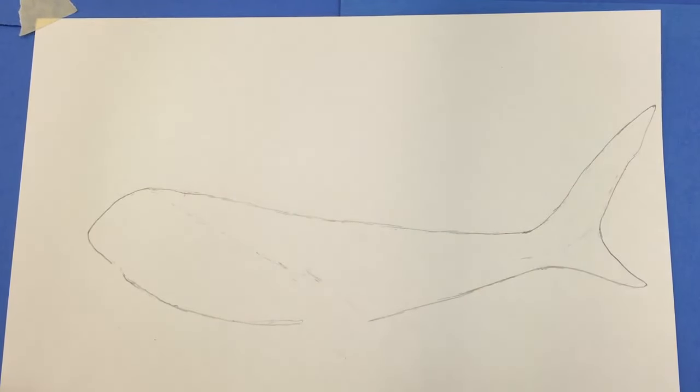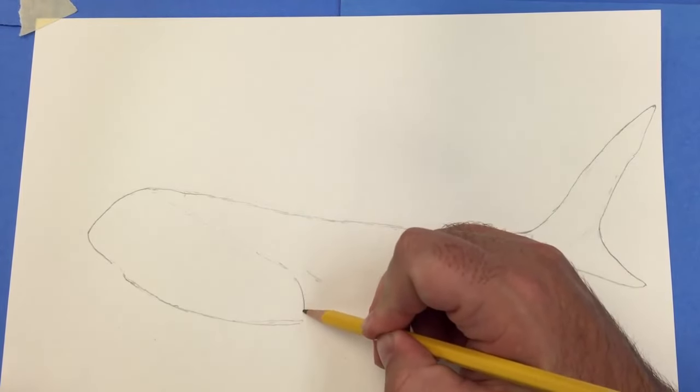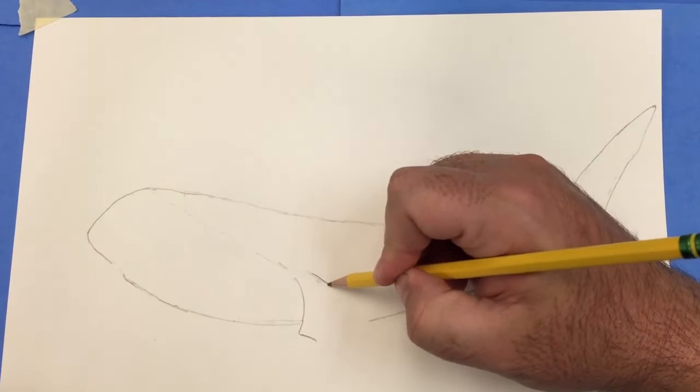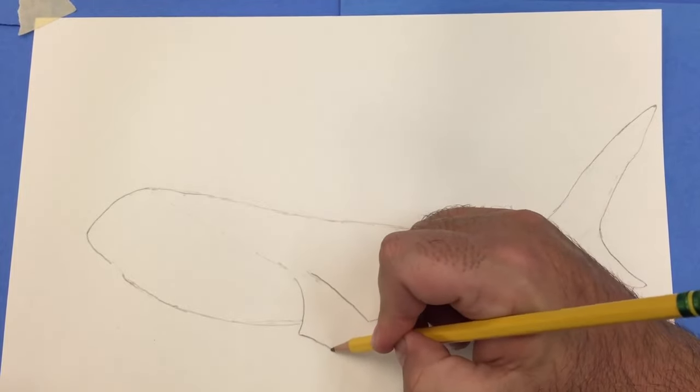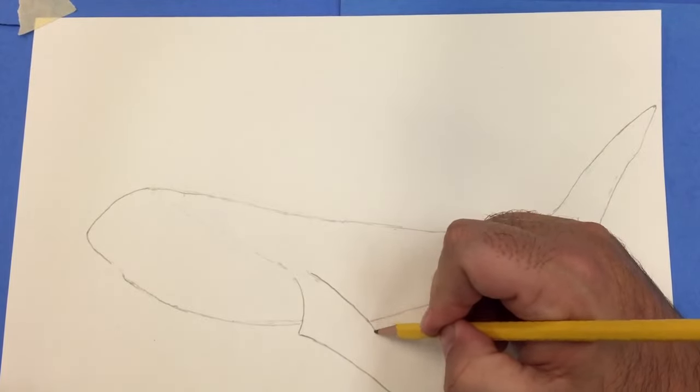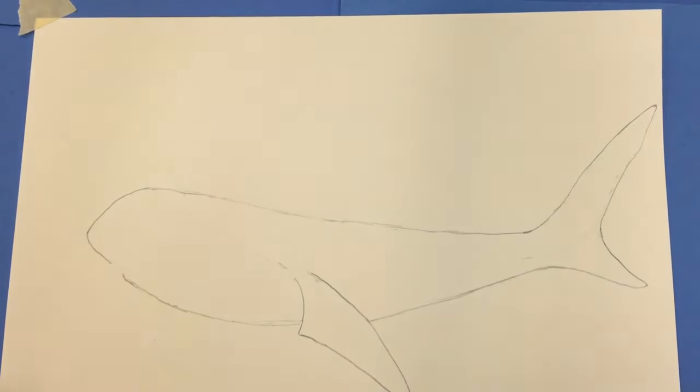And now I'm going to go to the pectoral fin. The pectoral fins are these triangle-shaped fins that come off the side of the shark's body. They help keep the shark stable in the water, sort of like airplane wings, giving them some lift. So that's the first pectoral fin. Now I'll come over to the other side here to show that there's also one on the other side of his body.